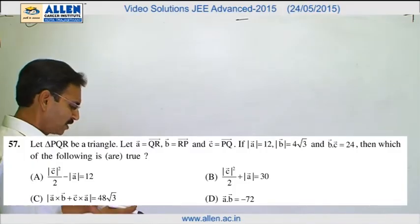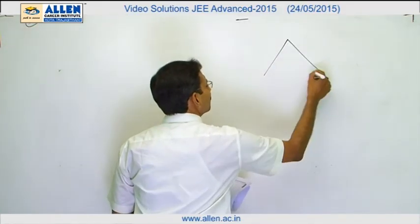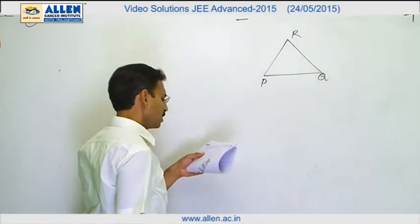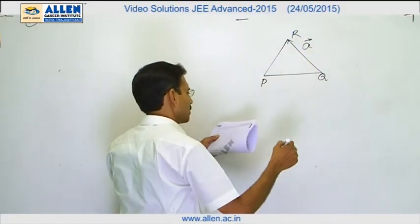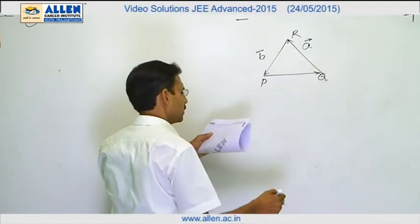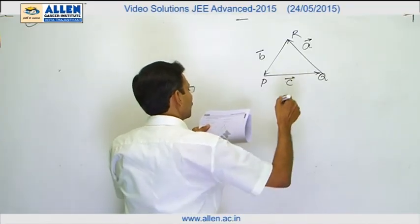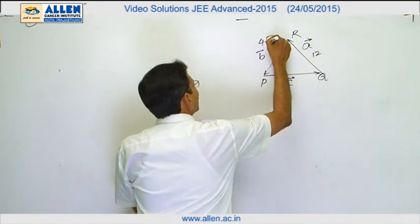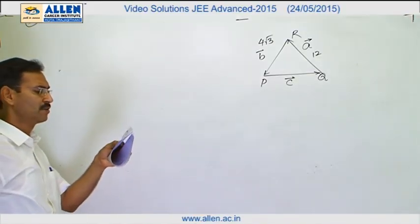Question number 57, it is a very simple kind of problem of vector algebra. We have a triangle PQR, a vector is representing QR, RP vector is represented by b and PQ vector is by c. We have the length, the length of vector a is 12, this is 12, this is 4 root 3 and this is unknown. We have to find the length of c first of all and then we will verify every option.